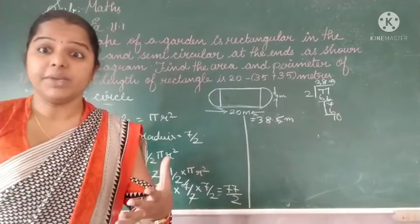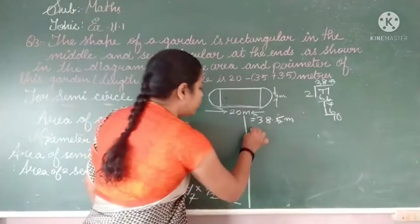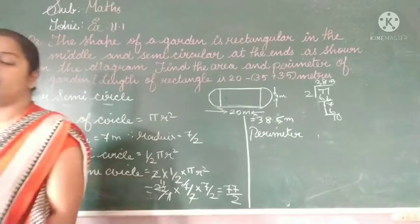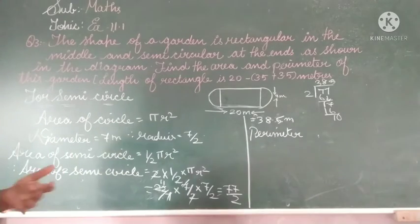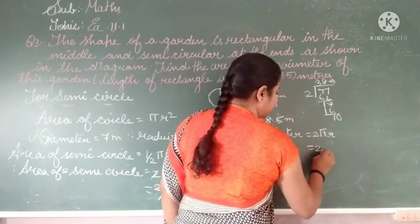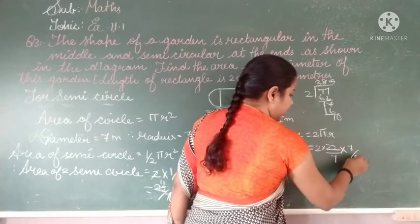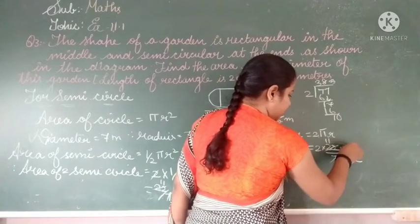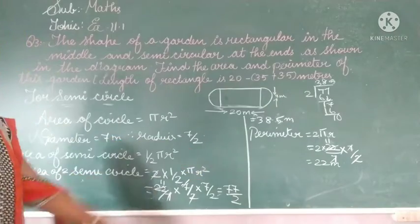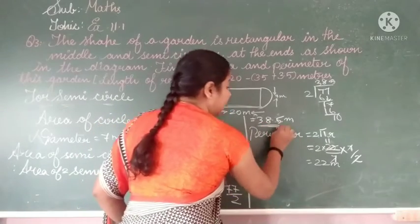Now we will find the perimeter of the semicircle. Perimeter is also called circumference. Perimeter of a semicircle is equal to π r = (22/7) × (7/2). Here the 7s cancel, giving 22/2 = 22 meters. So the perimeter of two semicircles is 22 meters and the area is 38.5 square meters.